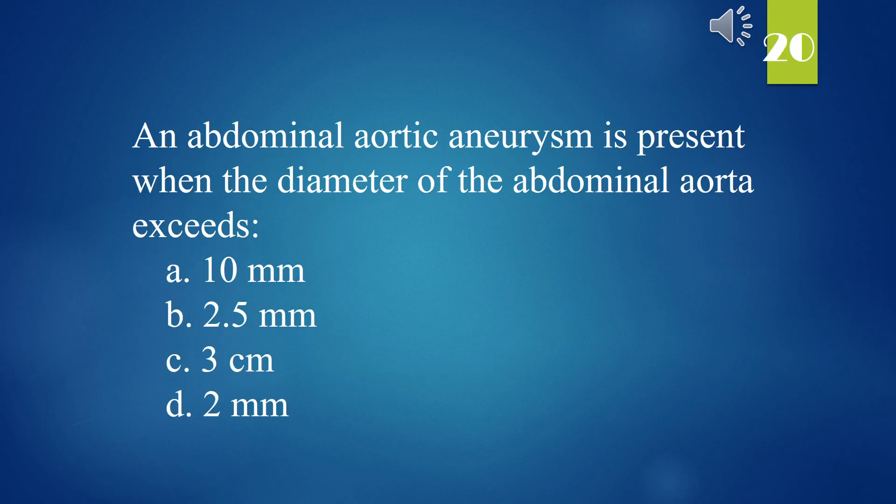An abdominal aortic aneurysm is present when the diameter of the abdominal aorta exceeds: A. 10 mm. B. 2.5 mm. C. 3 cm. D. 2 mm. The answer is C. 3 cm.